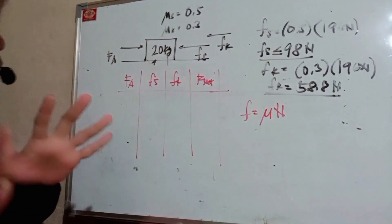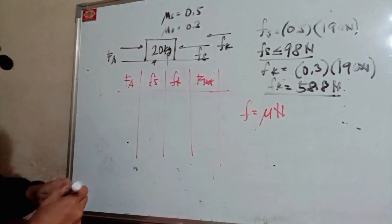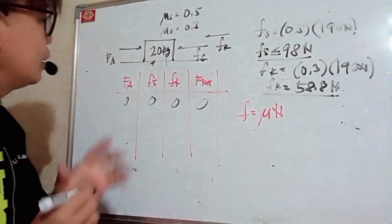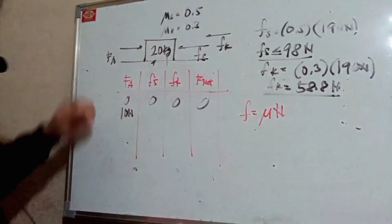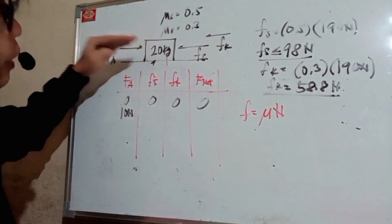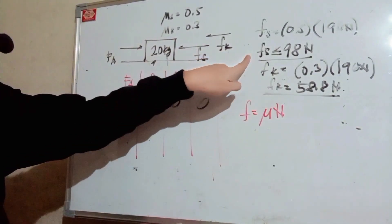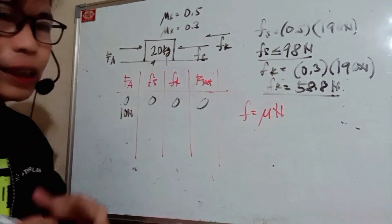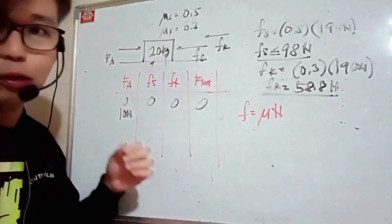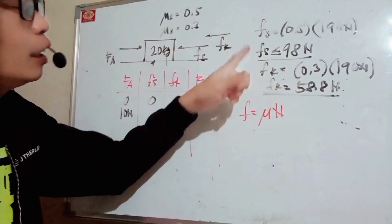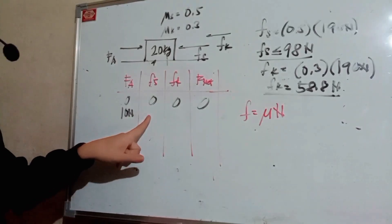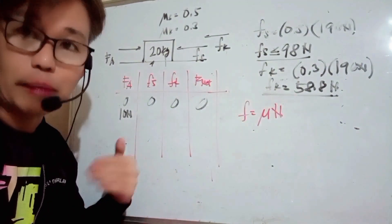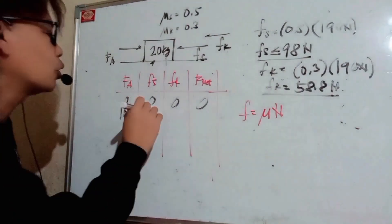If you push with 10 newtons, it doesn't mean your static friction jumps to 98 newtons. The static friction uses less-than-or-equal-to, meaning when you push, the object won't move yet because you haven't reached the threshold. You need 98 newtons or more for the object to move. So your static friction will match the force you apply — as long as you haven't exceeded the threshold, static friction matches your applied force. So your static friction is also 10 newtons, kinetic is zero, and net force is zero.